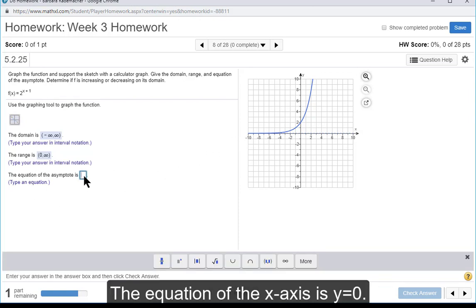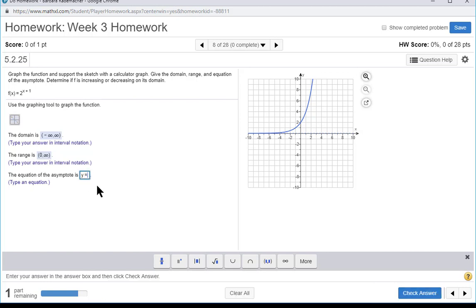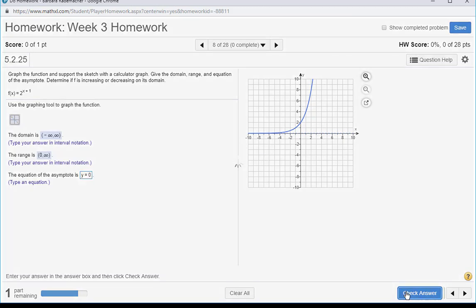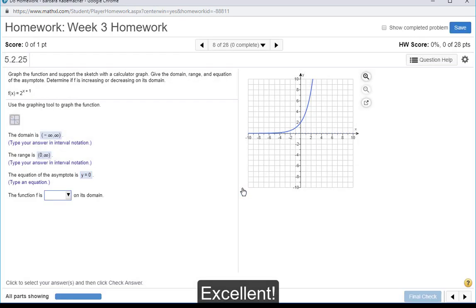The equation of the asymptote is y equals 0, because the equation of the x-axis is y equals 0. Check your answer. Excellent!